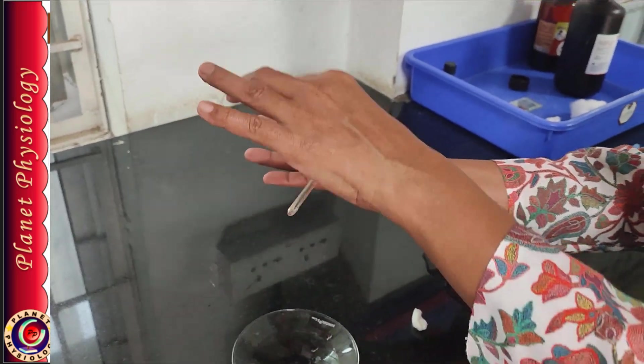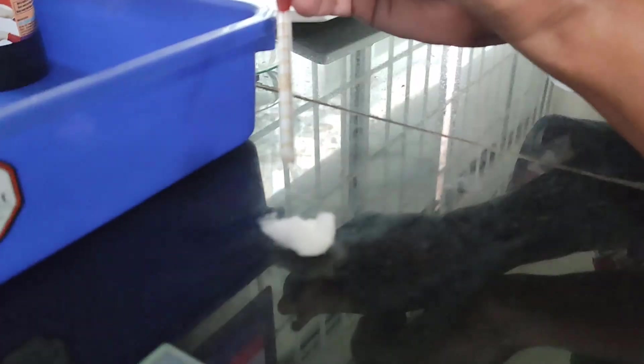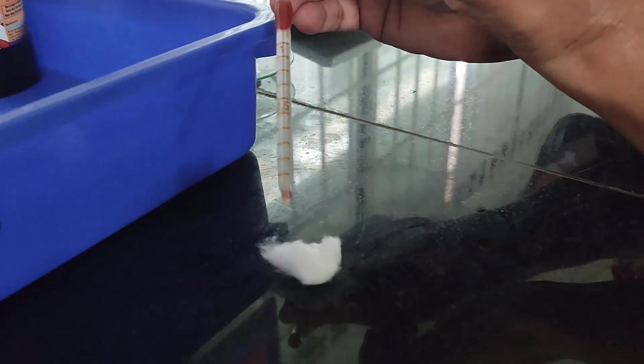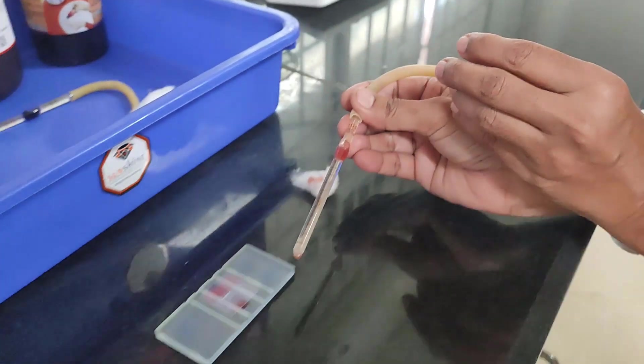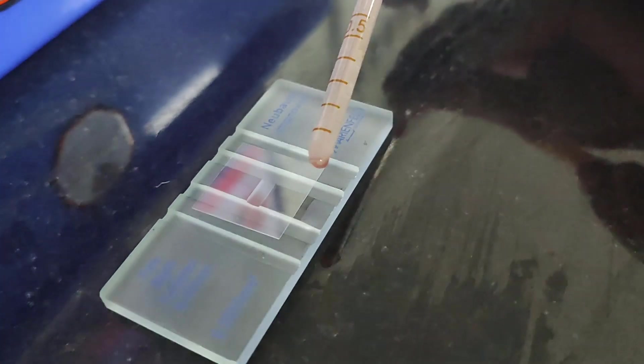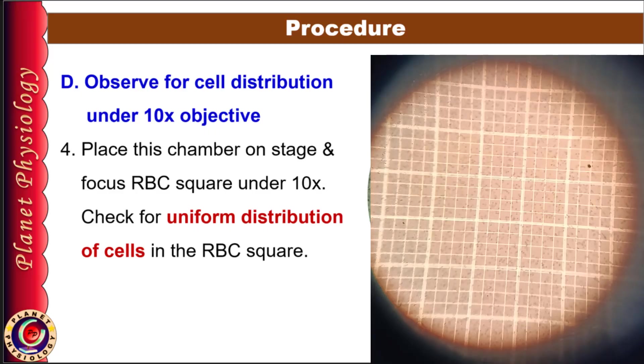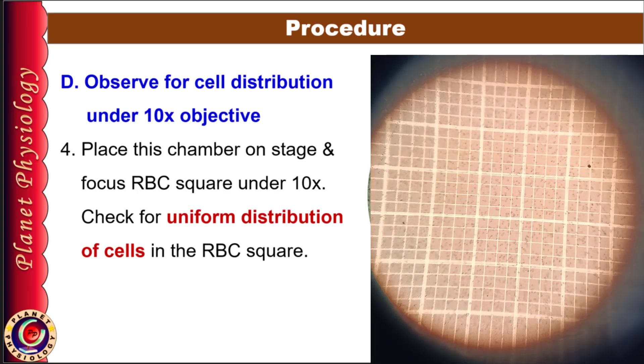Now let's see how to charge the chamber. Place a clean coverslip over the Neubauer chamber. It should cover both counting surfaces and the side gutters. Discard first two drops from the pipette then allow the third drop to form. Touch this drop to the chamber's edge near the coverslip and capillary action will pull the fluid under the coverslip. Wait for a minute for cells to settle. Place the chamber on the microscope stage without changing any settings. Since it's already focused under 10x, you will just need fine adjustment.